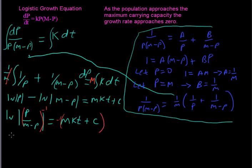And so now this becomes ln of, we don't need these absolute values anymore because m minus p is going to be positive and so is p, equals negative m kt minus c.